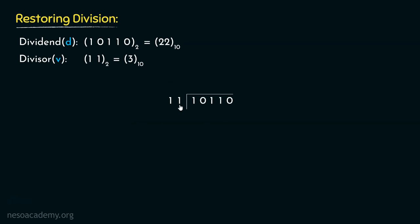Since it is a 2-bit divisor, when we start the division procedure, the first portion of the dividend is only 1 bit. If we subtract 2 bits from 1 bit, the result is going to be negative, so the subtraction isn't possible and we place a 0 in this place. For the next 2 bits, we have 10 and the divisor is 11 — that is 2 versus 3 — so the result will again be negative, and we need another 0.